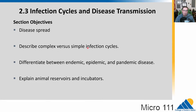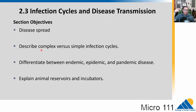We're going to describe complex versus simple infection cycles. When we come to parasites later in the course, they have the craziest infection cycles — for example, Toxoplasma goes into cats and rats and then can get into humans. We're also going to differentiate between terms for endemic disease, epidemic disease, and pandemic disease, and talk about animal reservoirs and incubators.